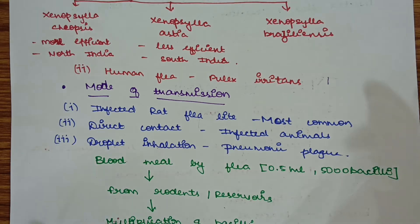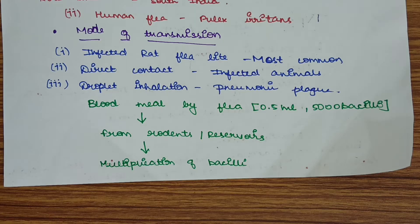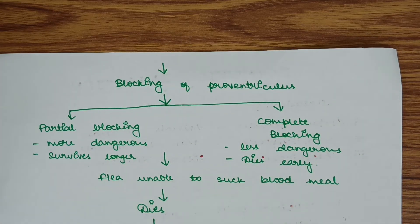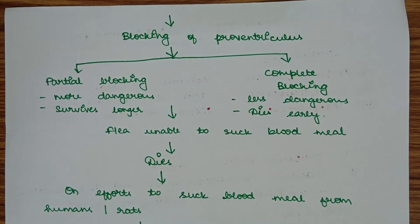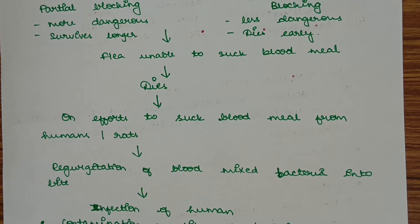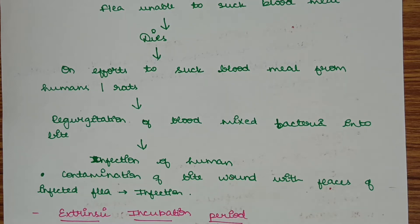The main pathogenesis includes a blood meal by the rat flea or human flea of 0.5 ml containing 5000 bacilli, taken from the rodents or other reservoirs. After taking the blood meal, multiplication of the bacilli takes place in the gut of the flea. This multiplication leads to blocking of the proventriculus, which may be partial or complete. Because of this blocking, the flea is unable to suck blood from another host and therefore dies. Before dying, while making an effort to suck blood from humans or other rats, regurgitation of blood mixed with bacteria occurs into the bite, leading to infection.